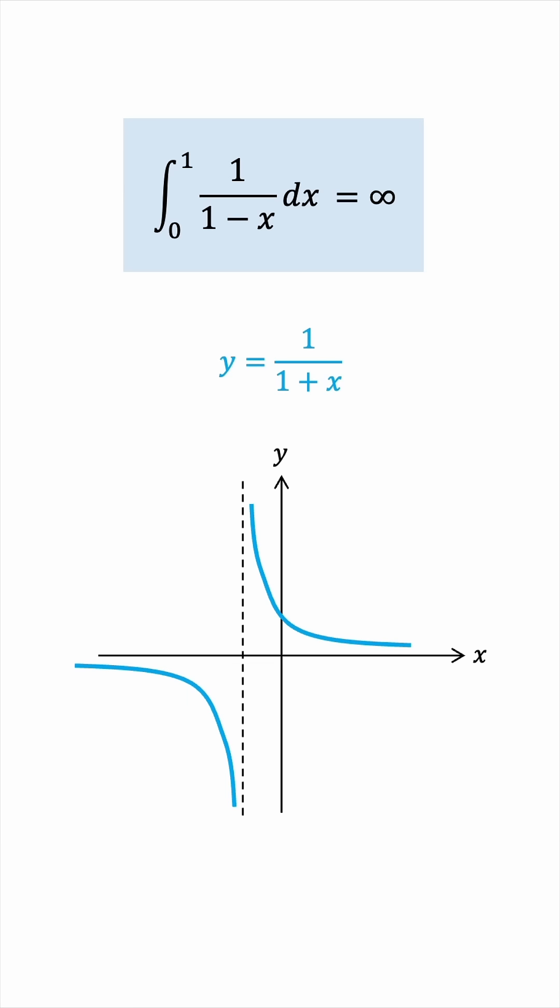And now we need to replace x by negative x, which is effectively a reflection in the y-axis, like this. So, the asymptote is at x equals 1 now.